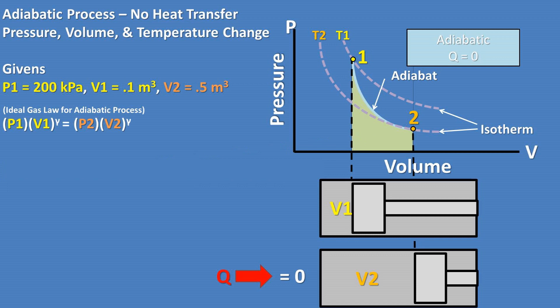Recall the ideal gas law for an adiabatic process is P1 times V1 to the power of gamma equals P2 times V2 to the power of gamma. Gamma being the ratio of the specific heat of a constant pressure process divided by the specific heat of a constant volume process. This can be found by looking up the value for the gas or substance you are working with using a Google search. We'll be using air and assuming a gamma of 1.41.